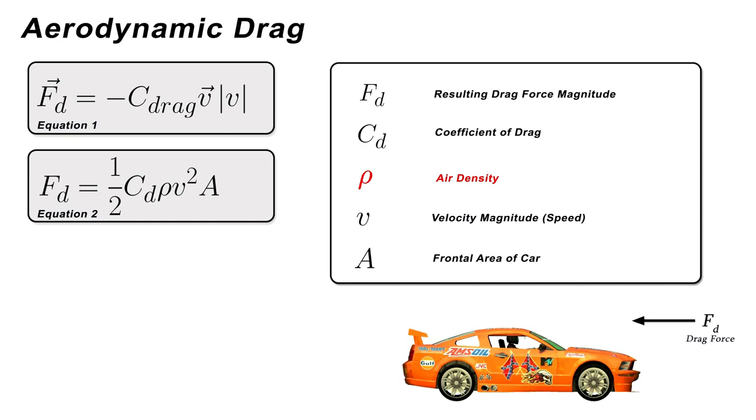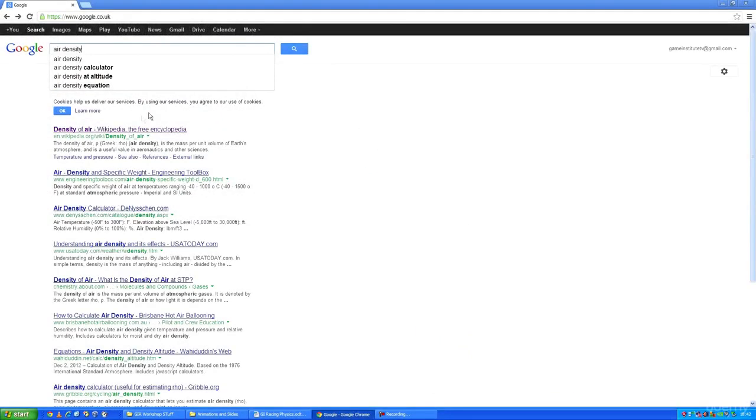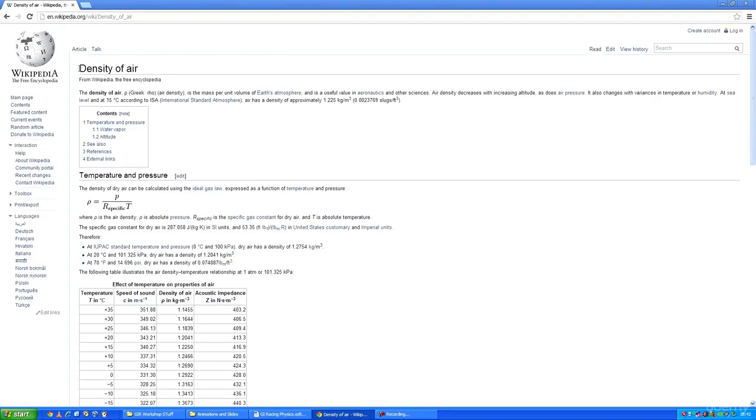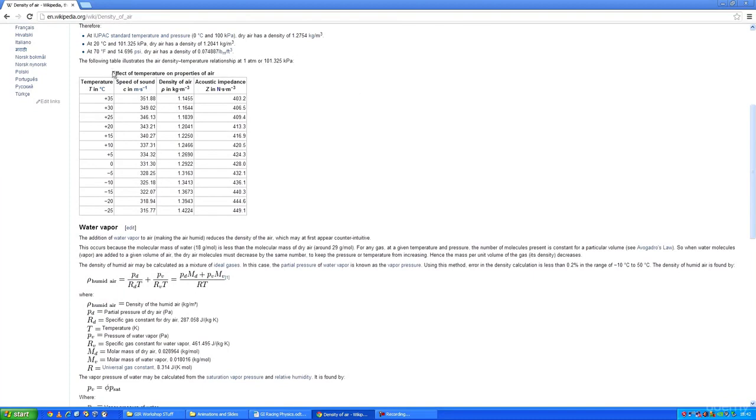Air density changes based on the current temperature, and you can look up on Wikipedia a table of air density values for a given temperature. For example, if we assume the temperature to be 5 degrees Celsius, we would use a value based on this table of 1.2690 kilograms per meters cubed.